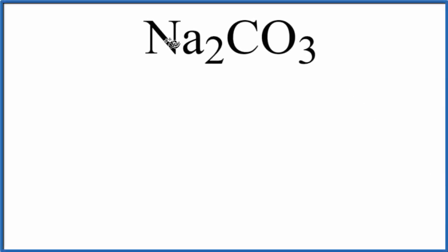To find the number of atoms in Na2CO3, that's sodium carbonate, let's write down each element first. So we have sodium, Na, then we have the carbon, and then we have oxygen.